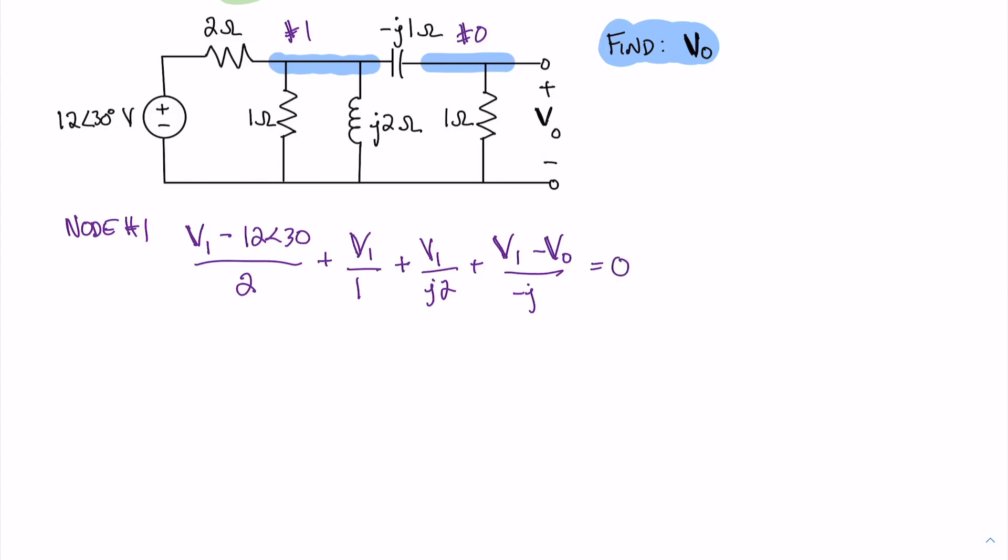Before we write our next node equation, let's simplify this by collecting our V1 and V0 terms. For the V1s, we have 1/2, plus 1, plus 1 over J2, and minus 1 over J. For our V0s, we have simply 1 over J. And we can't forget the supply 12 angle 30, which is divided by 2, so this equals 6 angle 30.